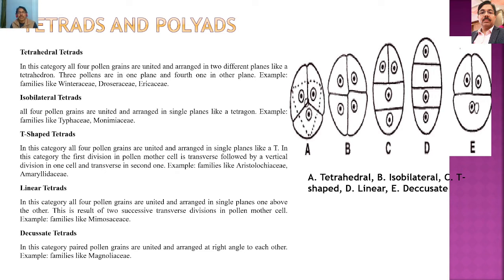The next category of pollen unit is tetrads. Tetrads are formed after meiosis — four cells are formed and the four cells remain intact with each other in different patterns. There are about five types of tetrads: tetrahedral, isobilateral, T-shaped, linear, and decussate.